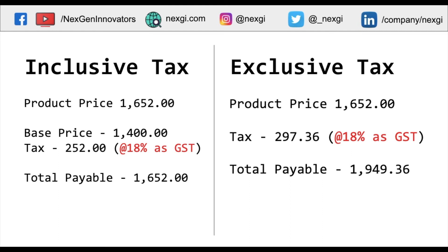Showing the price including tax is the best practice. For example, if you are using exclusive tax and the user sees a base price of 1650 rupees, but then an additional amount is added at checkout, you risk losing the sale. So whether you use exclusive or inclusive tax, you should display the final price including tax to the user.